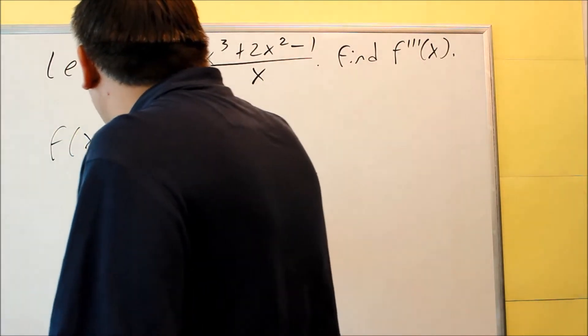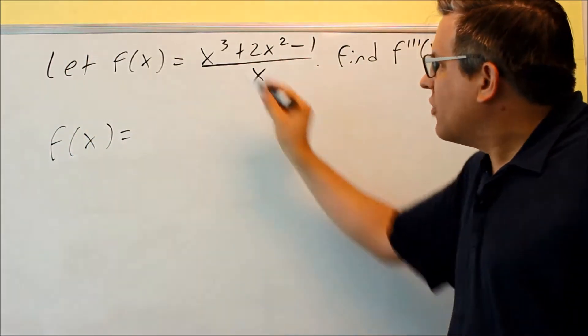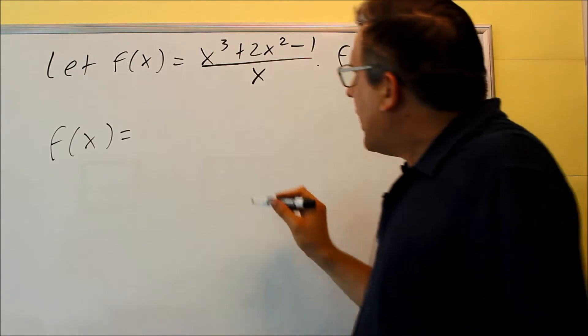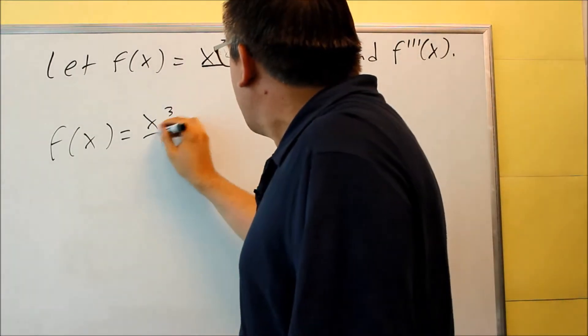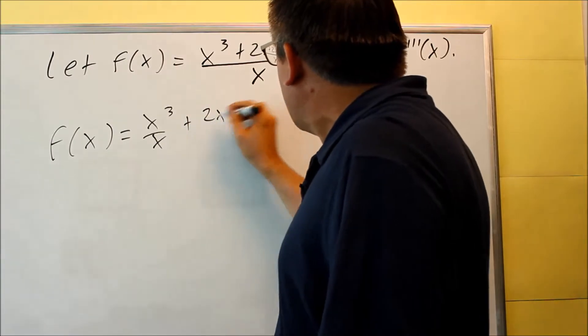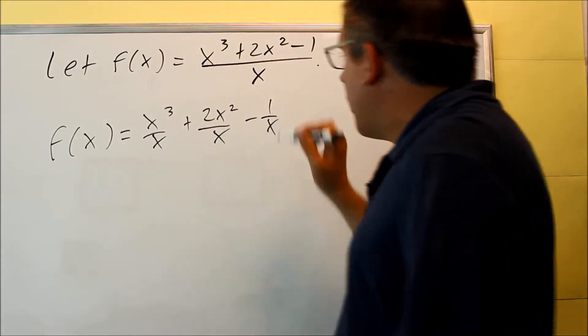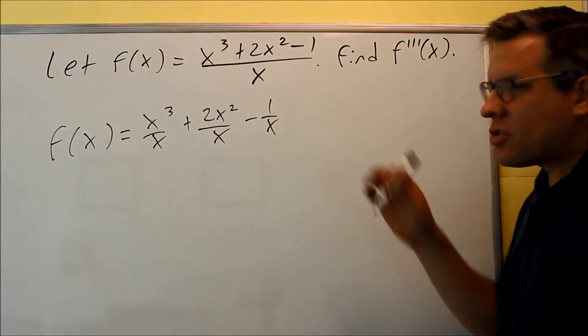So first, we're not doing any derivatives yet. We're just dividing everything on top by x. So I'm going to divide each of these separately. So x cubed over x plus 2x squared over x minus 1 over x. Then I'm going to simplify this one.